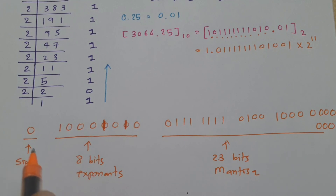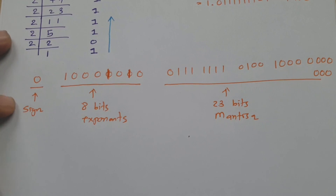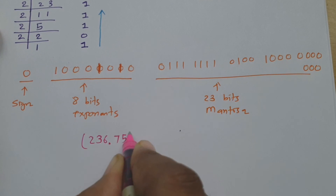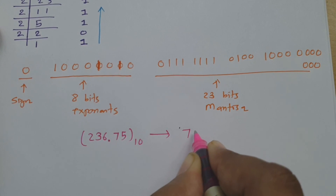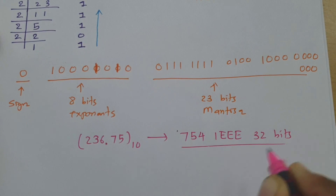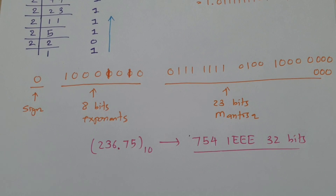Now you can understand how to find the IEEE 754 floating point single precision 32-bit representation. As an assignment, I am giving you the number 236.75 in decimal — represent it in IEEE 754 32-bit format and write your answer in the comments. I will get back to you if any mistake is there. Thank you so much for watching this video; please give your valuable suggestions so I can make future videos to solve your queries.